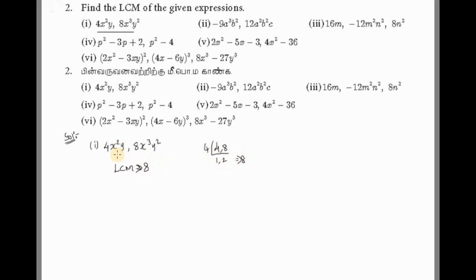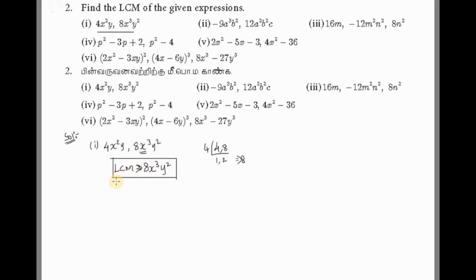Now for the variables, take the highest power. For x, we have x² and x³, so the highest power is x³. For y, we have y and y², so the highest power is y². Therefore, the LCM is 8x³y².